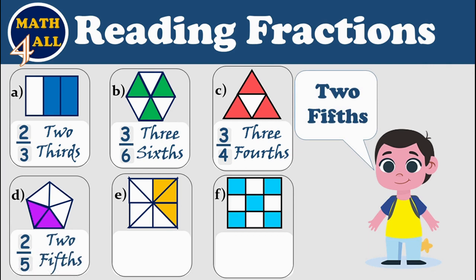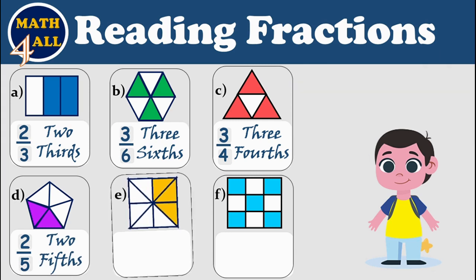Excellent! Now I will answer example E. As you see, we have just one, two, three — three colored parts — so the numerator is three. What about down? Down means all the parts in one whole: one, two, three, four, five, six, seven, and eight. So the one whole is divided into eight parts — the denominator is eight. I can read it as three eighths.